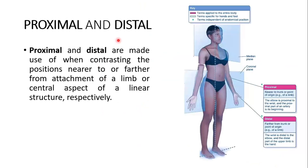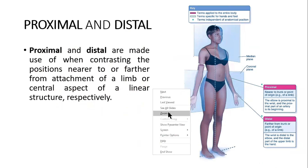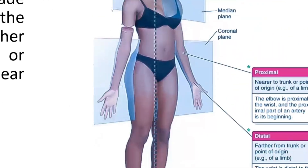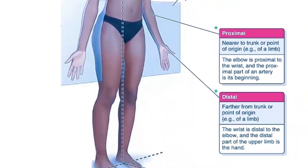Proximal and distal are used when contrasting positions nearer to or further from the attachment of a limb or the central aspect of a linear structure. Proximal means nearer to the trunk or point of origin; for example, the elbow is proximal to the wrist. The proximal part of an artery is its beginning. Distal means further from the trunk or point of origin; the wrist is distal to the elbow, and the distal part of the upper limb is the hand.